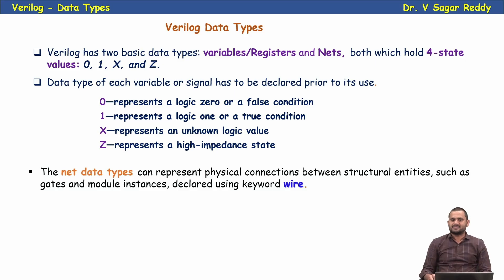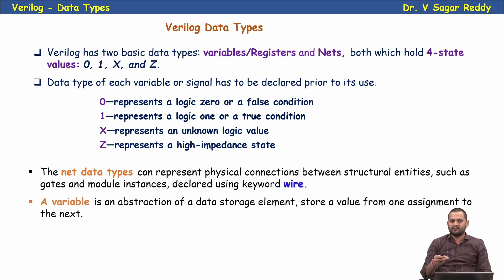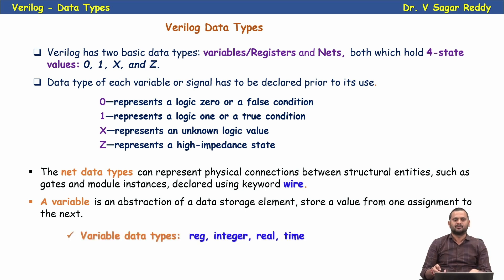The net data type can represent a physical connection between structural entities such as gates and module instances. Net data types are declared using the wire keyword and are used to connect physical entities in a model. A variable, on the other hand, is an abstraction of a data storage element that stores a value from one assignment to the next. We have various types of variable data types: reg, integer, real, and time.